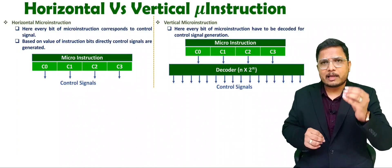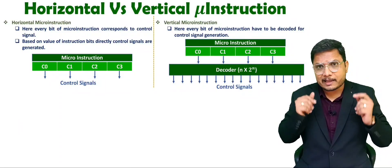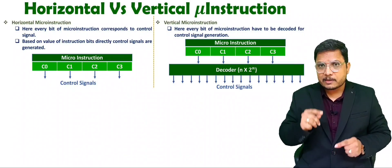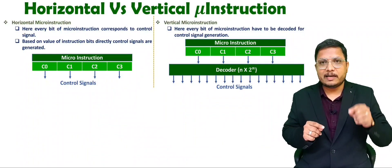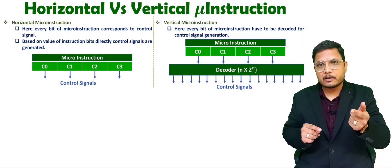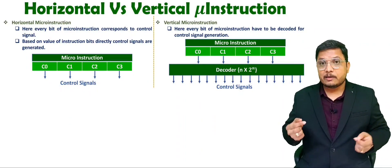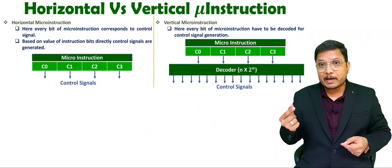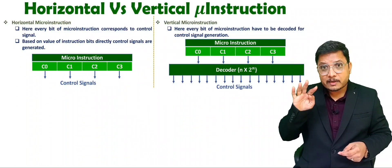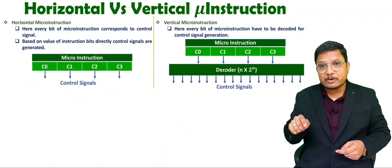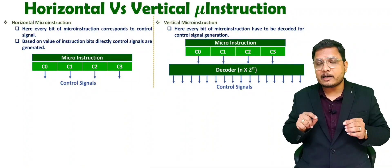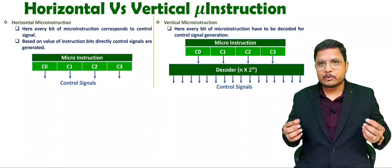There are a few basic things to understand directly. In horizontal micro instruction, it is directly generating control signals, so obviously it will be fast. With vertical micro instruction, you have to decode those bits first using a decoder, and after that it generates control signals, so obviously it will be slow.